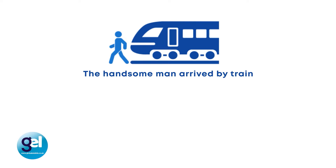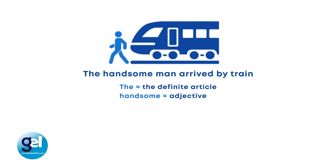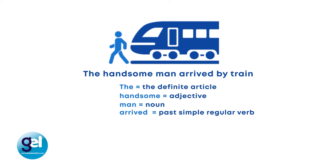Let's have a look. 'The,' the first word, is our definite article. The second word, 'handsome,' is an adjective. 'Man' is a noun. 'Arrived' is our past simple regular verb. 'By' is a preposition and 'train' is a noun.